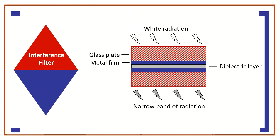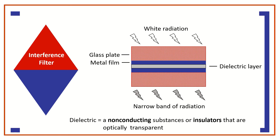An interference filter consists of a very thin layer of a transparent dielectric material coated on both sides with a film of metal that is thin enough to transmit approximately half of the radiation striking it and to reflect the other half. A dielectric is a non-conducting substance or insulator, and such materials are usually optically transparent. This structure is sandwiched between two glass plates that protect it from the atmosphere.